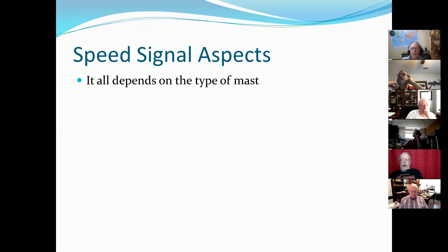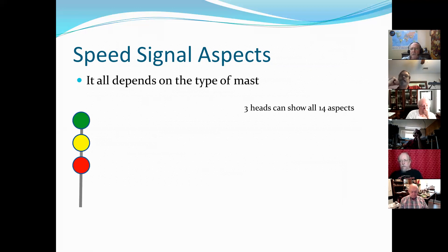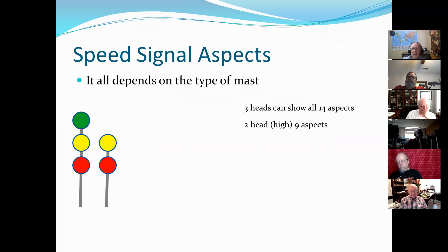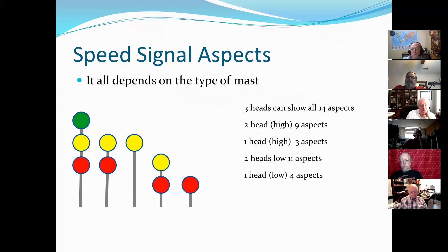Let's start and look at some of the aspects of the signals. If you're using a full three-head, you can display all 14 aspects of speed signaling. If you're using a two-head mast, you can display nine of the 14 aspects. A one-head can only display three aspects. If you've got dwarf signals, a two-headed dwarf can have 11 aspects, and a one-headed dwarf can show four aspects. And a good rule of thumb: if it ain't all red, it ain't red at all.